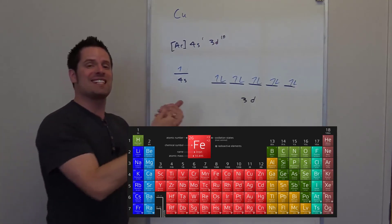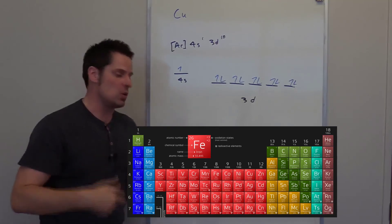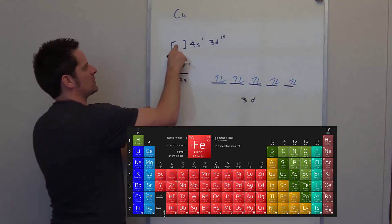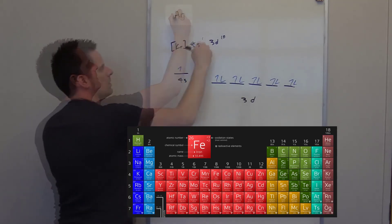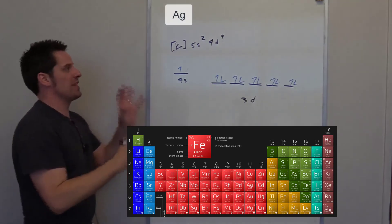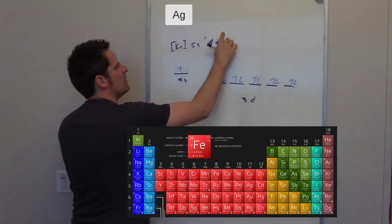Now the elements on either side of copper don't do anything weird like this. However, the elements that are in the same column beneath copper, which are silver and gold, do. So silver, for instance, you would assume would have an electron configuration of 5s2-4d9. But for the exact same argument, it's not. It's actually 5s1-4d10.